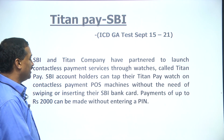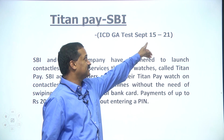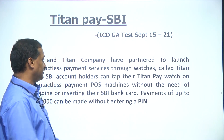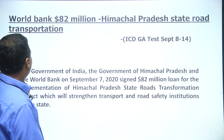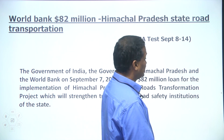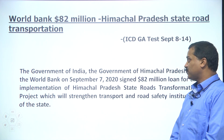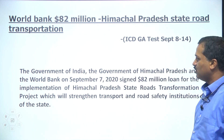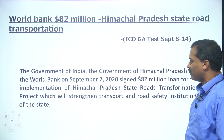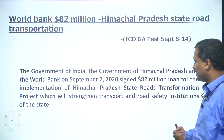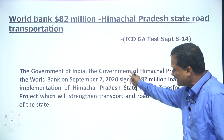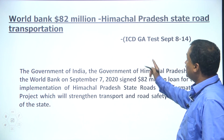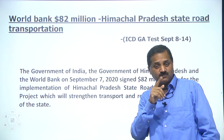Titan Pay with State Bank of India — this was in ICDG test September 15–21. Reading these should give you confidence. World Bank 82 million for Himachal Pradesh state road transportation — the Government of India, the Government of Himachal Pradesh and the World Bank signed an agreement for 82 million for implementation of the Himachal Pradesh State Road Transportation project, which will strengthen transport and road safety. This is the exact text of my note, and the 82 million figure is exactly what was asked in the examination.